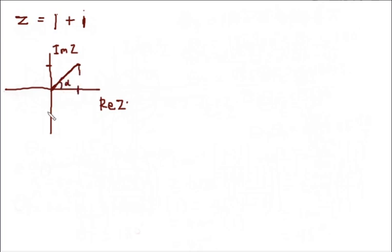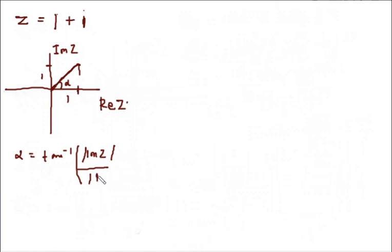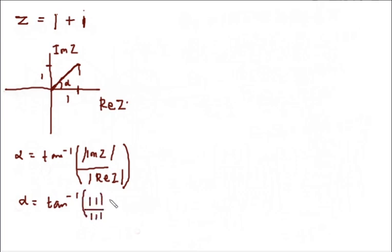We need to find the value of alpha. Alpha equals tan inverse of the absolute value of the imaginary part of z divided by the absolute value of the real part of z. Alpha equals tan inverse of the absolute value of 1 divided by the absolute value of 1, which turns out to be tan inverse of 1, equal to 45 degrees.